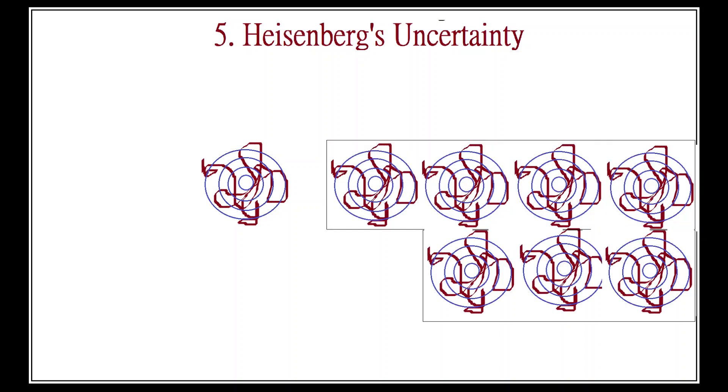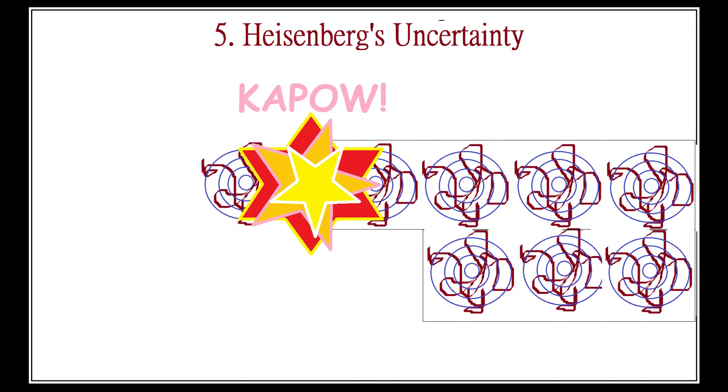But because of Planck's constant, our interaction cannot somehow get below the particle or become unobtrusive enough that it doesn't change the photon in a fundamental way, i.e. from wave to particle. Our only choice is basically to hit the particle full in the face with a baseball bat.